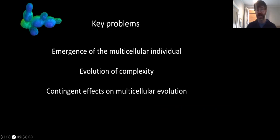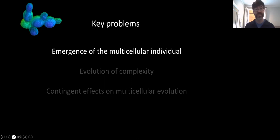And so in this tutorial talk, I want to talk about three sets of problems, and each one will have some individual questions along the way. But first, we'll talk about how the multicellular group emerges as the new kind of individual. Then we'll talk about the evolution of complex morphology. And finally, we'll talk about contingent effects, what aspects of multicellular evolution depend on specifics from the unicellular ancestors. But first, how does the multicellular individual emerge?